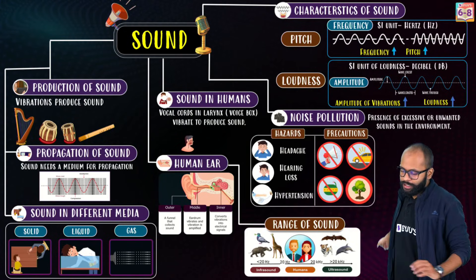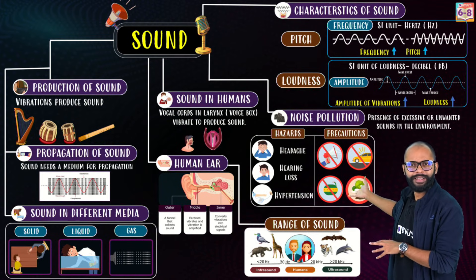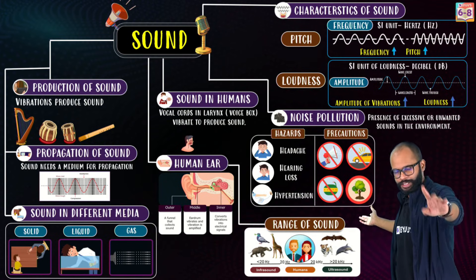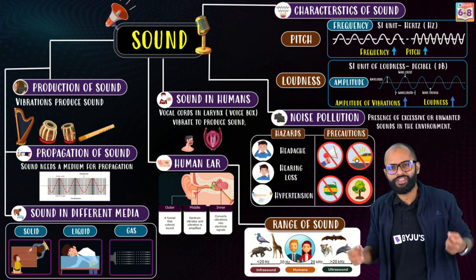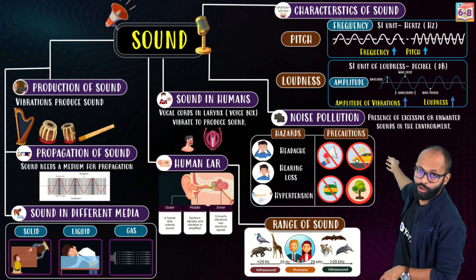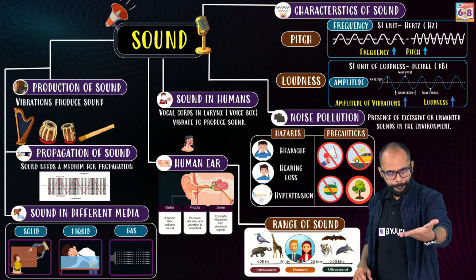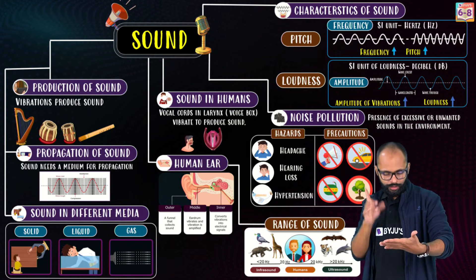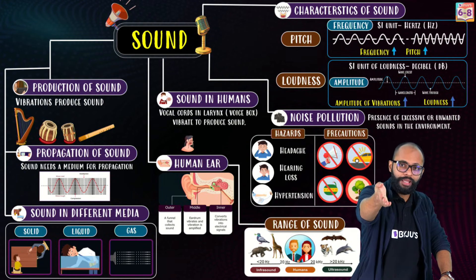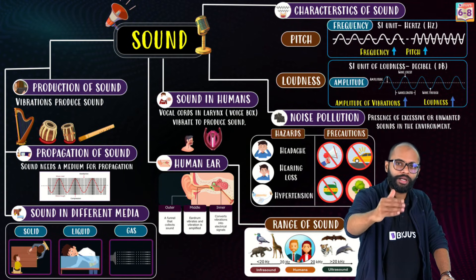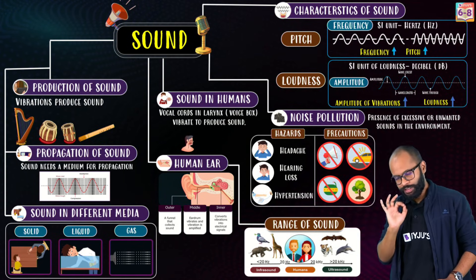Look at the whole mind map — this is everything that can come in exams. Take a printout, mark any extra notes on it, and every two to three days take it out, have a quick look, revise everything, and keep it back. That is how you do quick revision. Mind maps are the best for quick revision when you don't have much time.